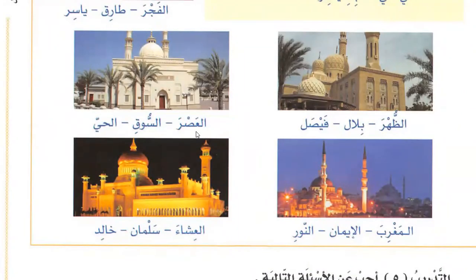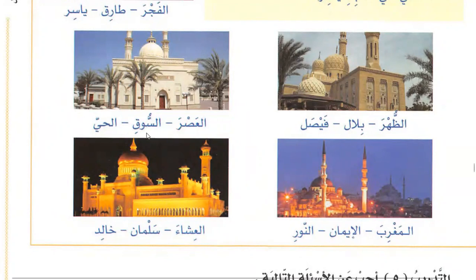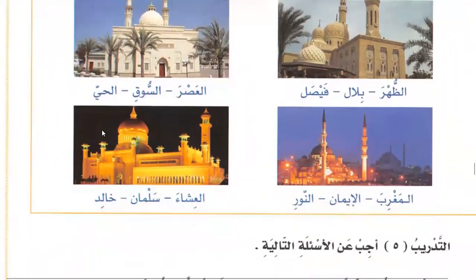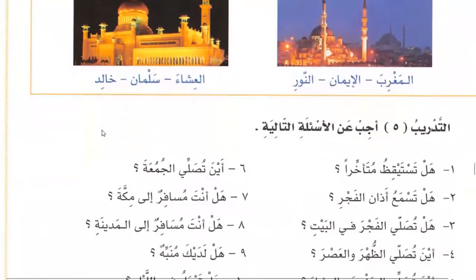Where do you pray the Asr — aina tusalli al-asir? Second person: usalli al-asir fi masjid yasir. And where do you pray — wa aina tusalli? He will reply: usalli fi masjid yasir — I pray in the neighborhood mosque. In this way you will know it.